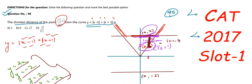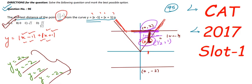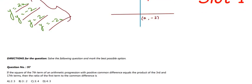Therefore the shortest distance is 1 unit. Option A matches our answer, so option A is the correct answer to question 96. Now let's move on to question 97.